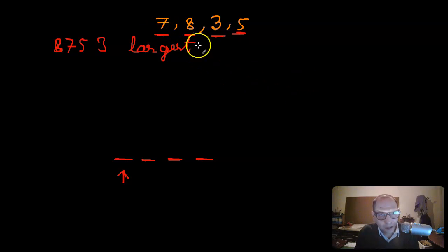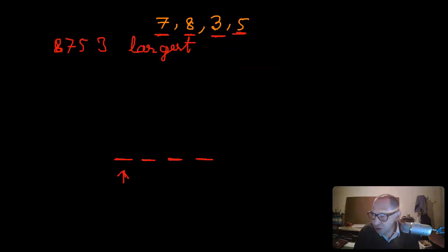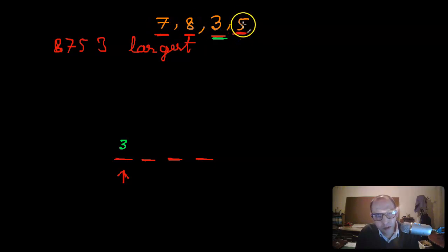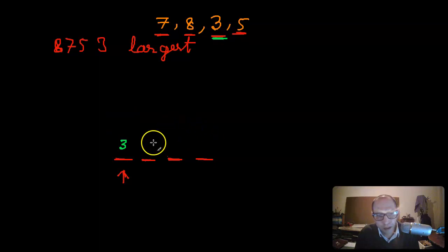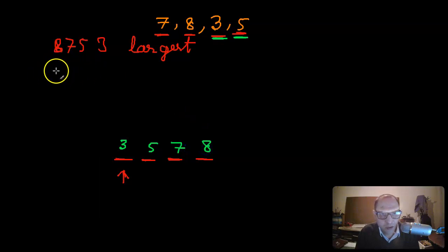Since we are looking for the smallest number possible, we have to contribute the least to the thousands place. The least I can contribute is the three - putting three there gives three thousand; putting five gives five thousand, eight gives eight thousand, seven gives seven thousand. So three is the smallest contribution. Then applying the same logic for the remaining places, after three comes five, then seven, then eight. So the smallest number is three five seven eight.